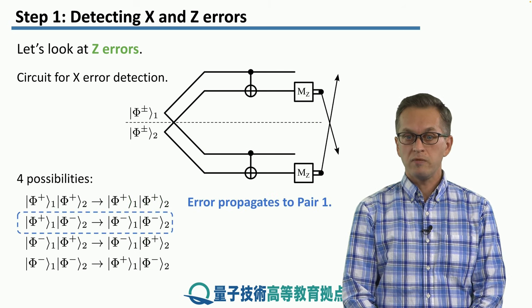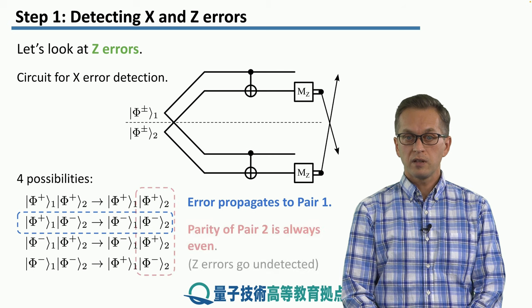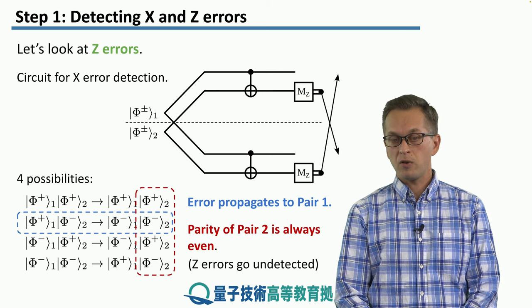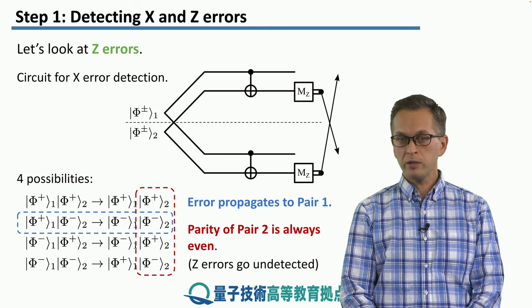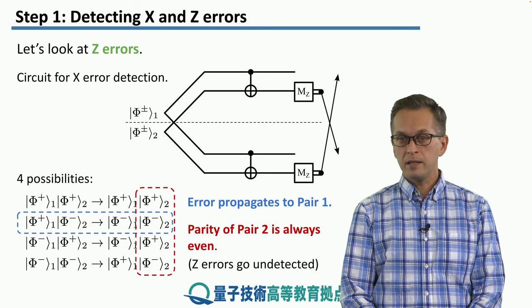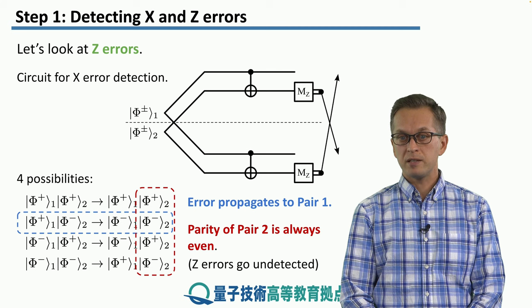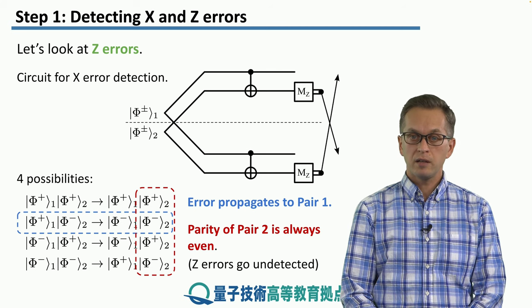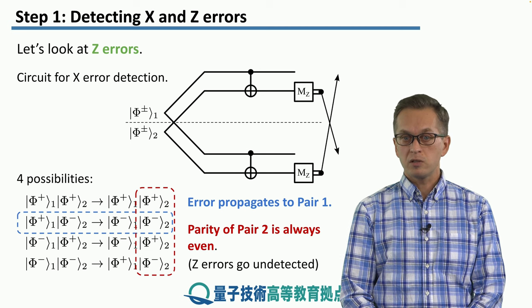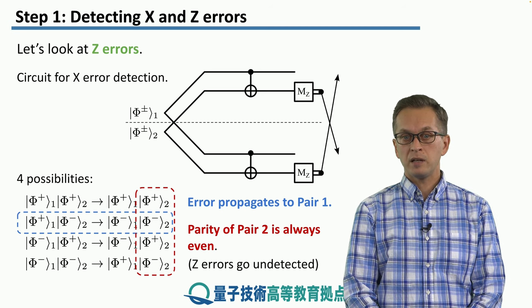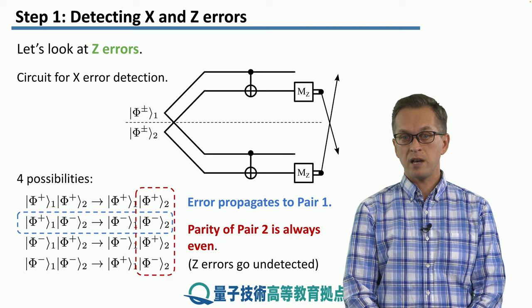And what's even worse, if you look at the state of pair two in all these four possibilities, the parity of the state in the Z bases is even, meaning that we are always instructed to keep pair one. So this scheme completely does not detect Z errors at all.